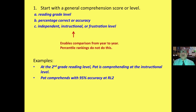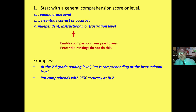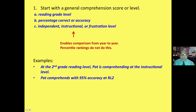Step one: start with a general comprehension score or level. You should know the general reading grade level, percentage correct or accuracy at that reading grade level, and whether it's independent, instructional, or frustration level. This enables comparison from year to year. Simply giving percentile rankings does not do this. For example: at the second grade reading level, PAT is comprehending at the instructional level — or better yet, PAT comprehends with 95% accuracy at reading level two.